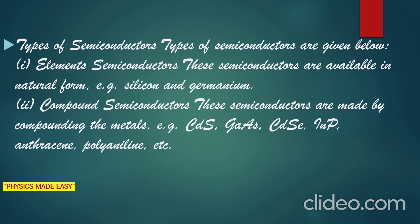Semiconductors are of different types. The first one is elemental semiconductors — these are available in natural form and are created from elements. For example, silicon and germanium semiconductors are elemental semiconductors. The second type is compound semiconductors, which are made by compounding metals — by making a compound of two elements such as germanium arsenide. Such types of semiconductors are known as compound semiconductors.